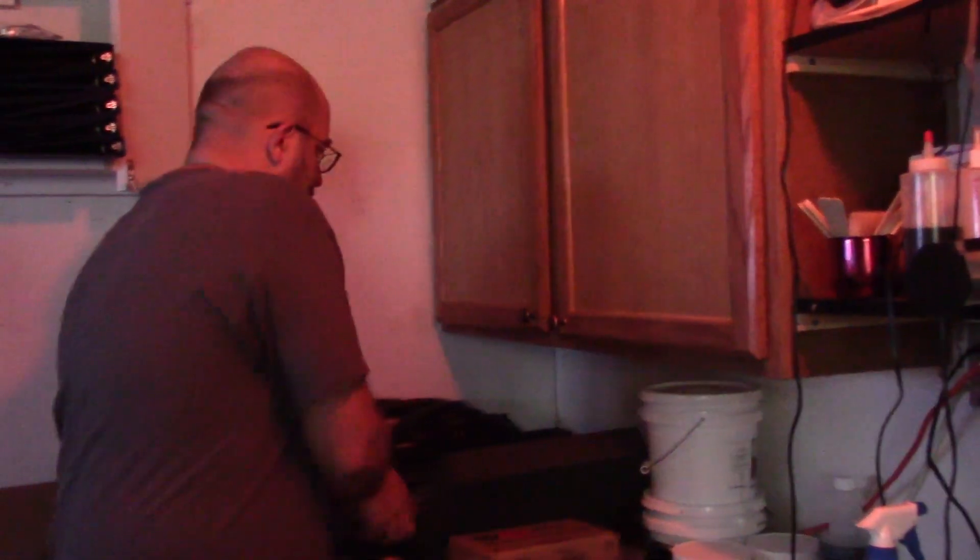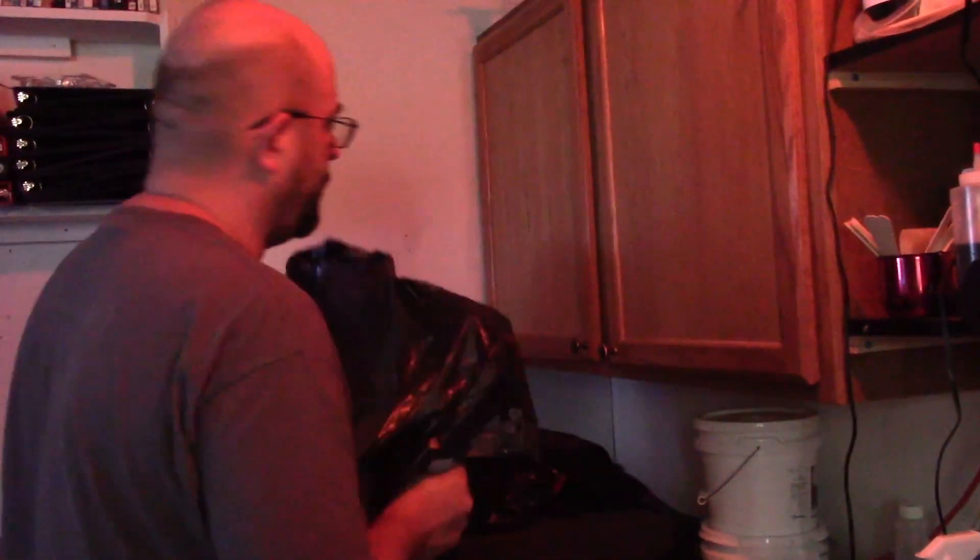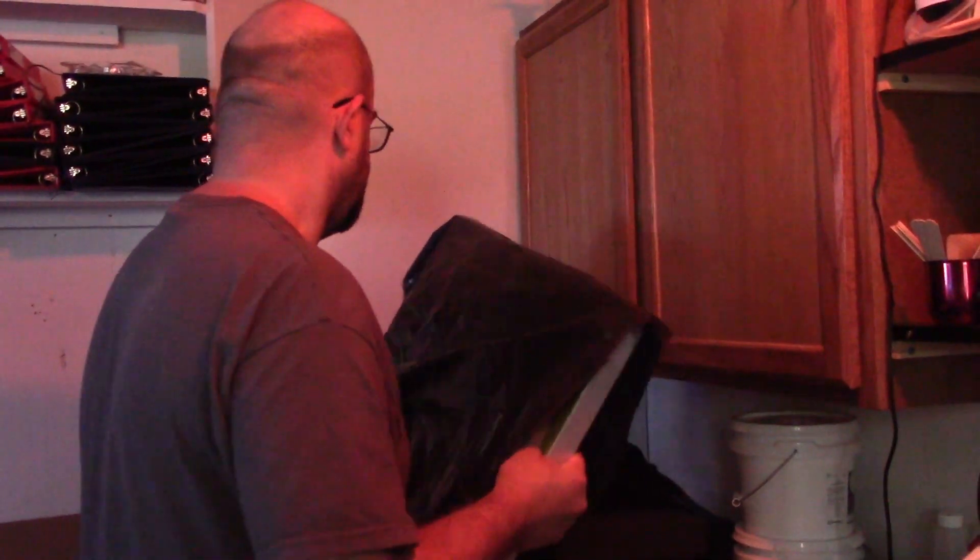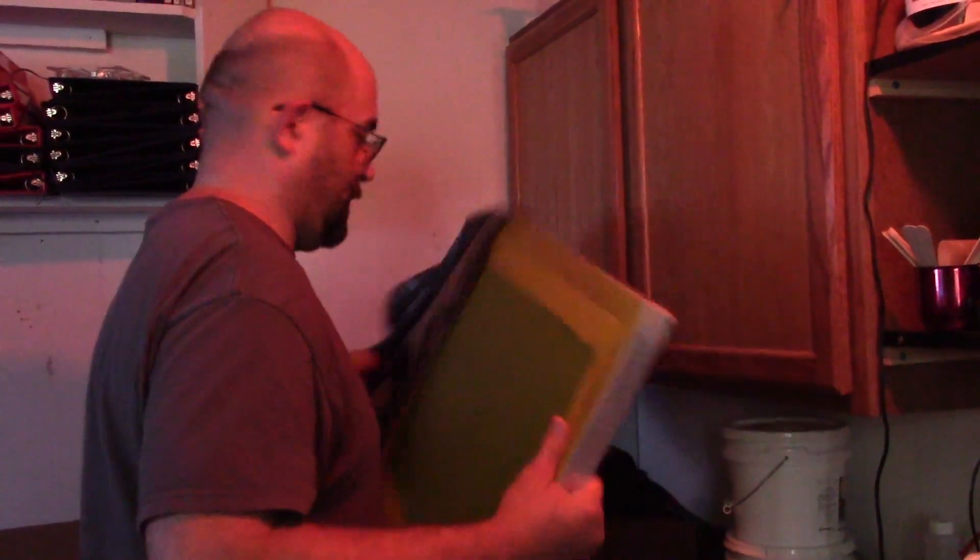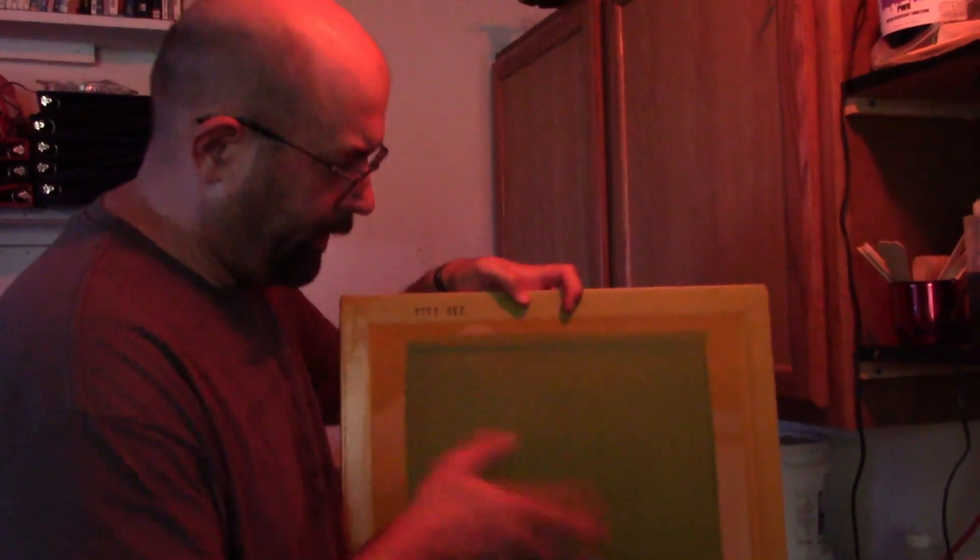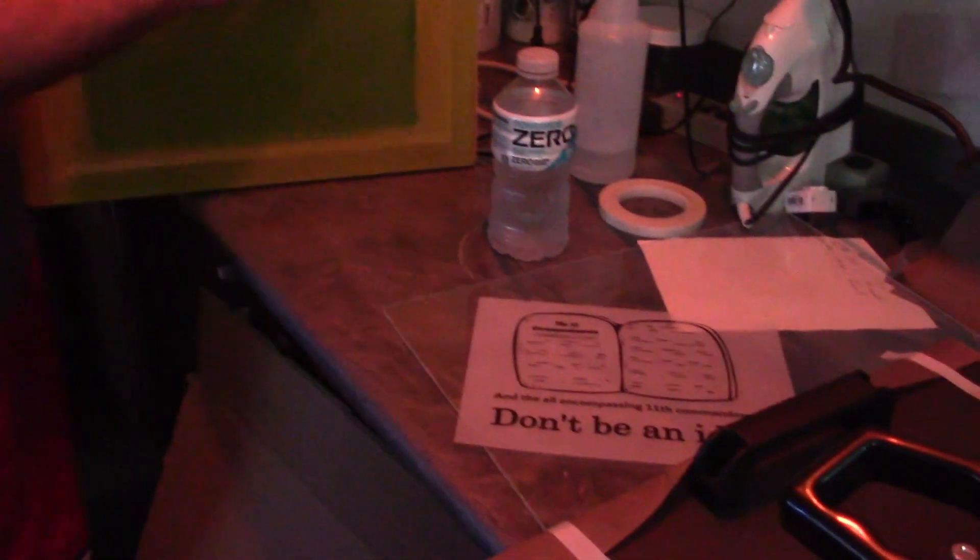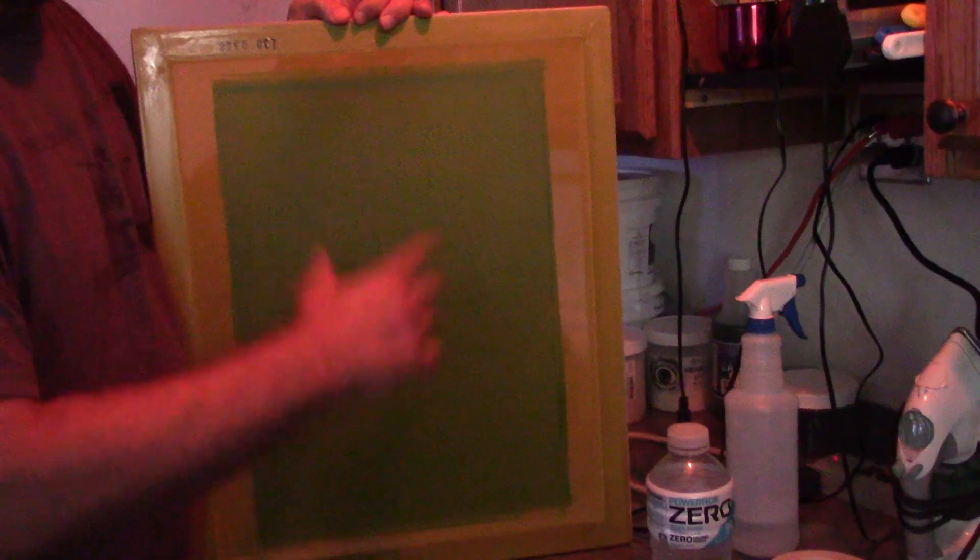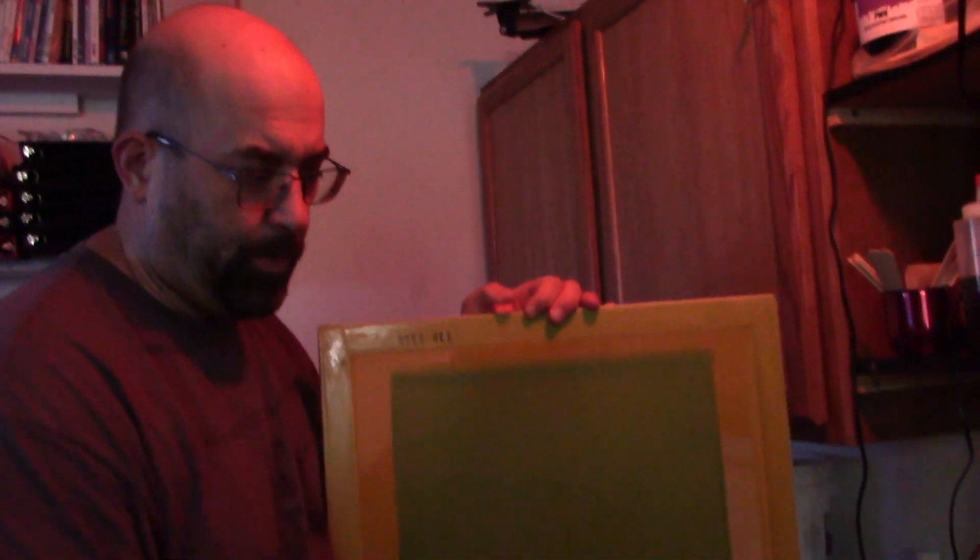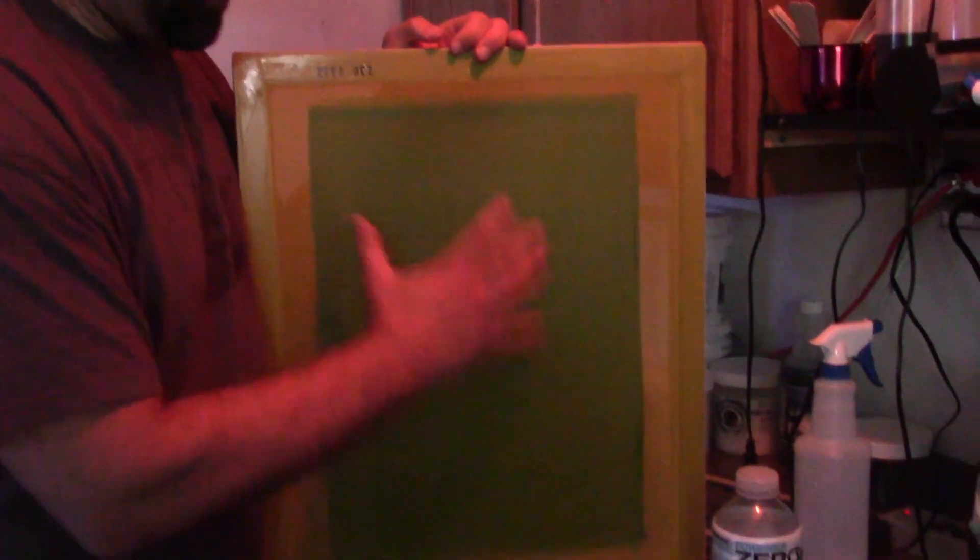In order to do that, we take out a screen. This silkscreen has emulsion already on it. Not going to get into that today, but we're going to take this design and burn this design into the screen and wash it out with water. Then what you'll have is whatever's left will allow ink to go through.